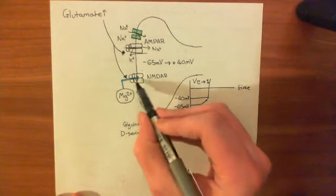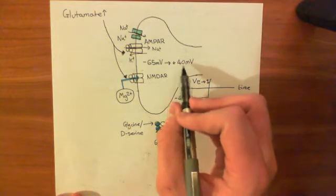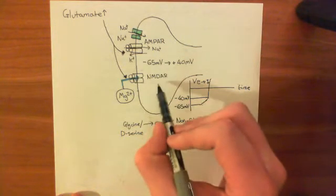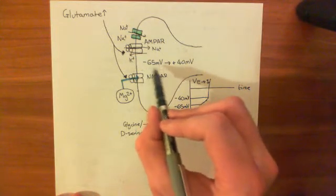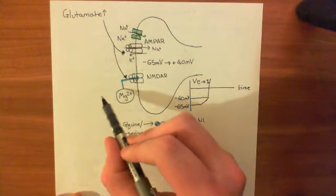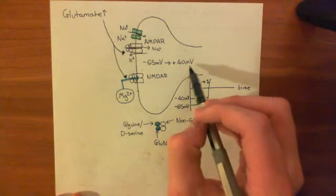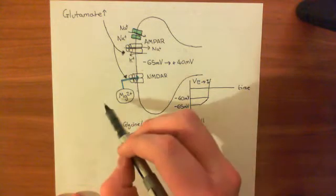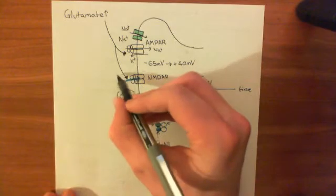Now, this magnesium ion that was sitting blocking this NMDA receptor isn't going to like that. It was trying to get into the intracellular compartment, because the intracellular compartment had an electrical potential which was 65 millivolts lower than the electrical potential of the extracellular compartment. Now, the intracellular compartment has got an electrical potential 40 millivolts higher than the extracellular compartment.